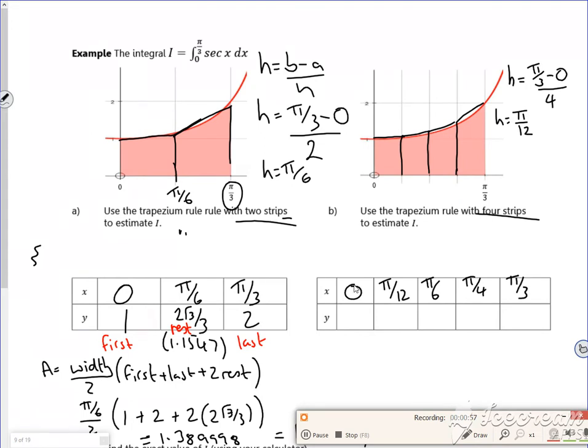So they've got their answers: 1, √6 minus √2 over 3, 2√3 over 3 which we had before, √2, and 2. But like I say, you can use your calculator to do it.